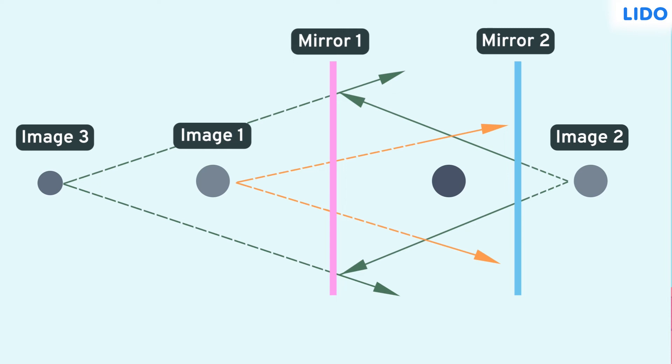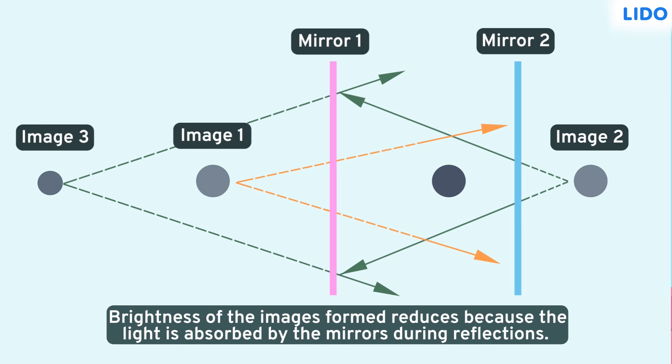Did you notice one more thing? The brightness of all the images are not the same. The first two images are bright but the third one is less bright. This occurs because while reflecting, some part of light is also absorbed by the mirrors, due to which successive images become dimmer.